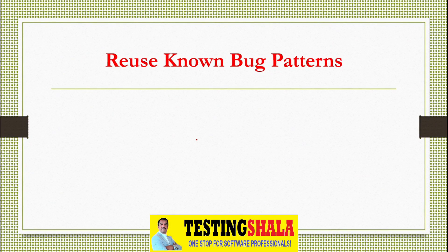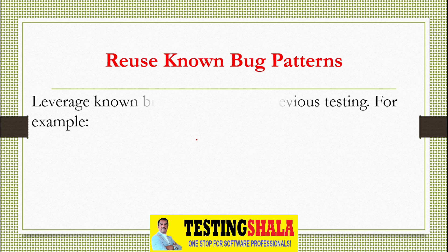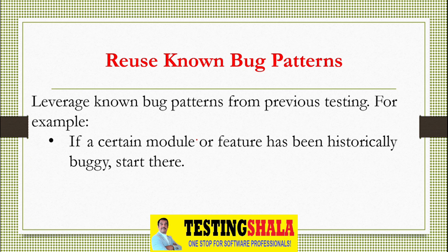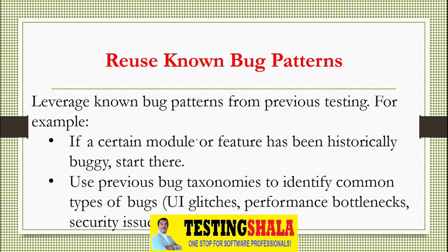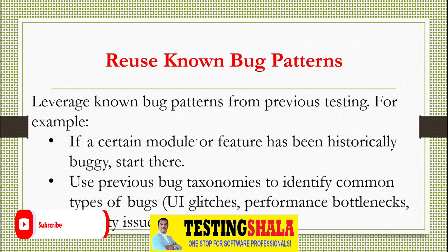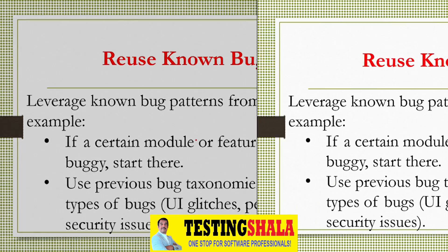The next method is reusing known bug patterns. If you know certain bug patterns in your application where more issues tend to be found, you can reuse that concept. By following the same flow or path as previously identified bug patterns, you can definitely find more issues as well.